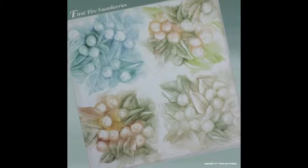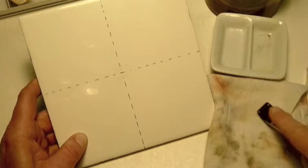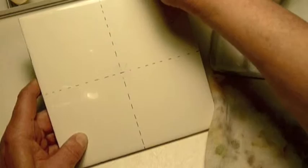Following is a presentation for painting these first fire snowberries. Using a 6 inch porcelain tile divided into four sections, each one will be a different colorway.